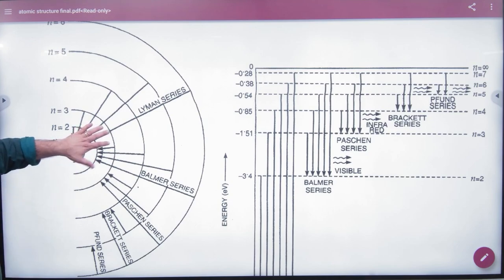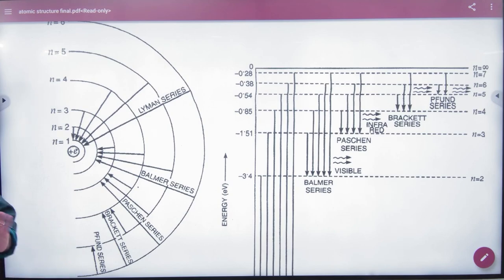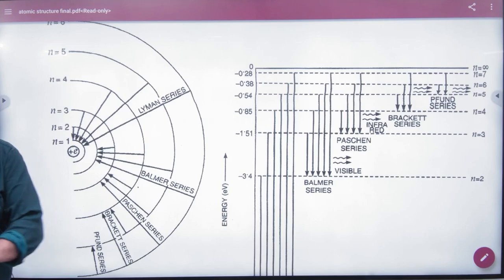If the electron transitions down to 2, it's the Balmer series. If to 3, it's the Paschen series. There's also the Brackett and Pfund series. So you should know this. There are questions on competition and NCERT.